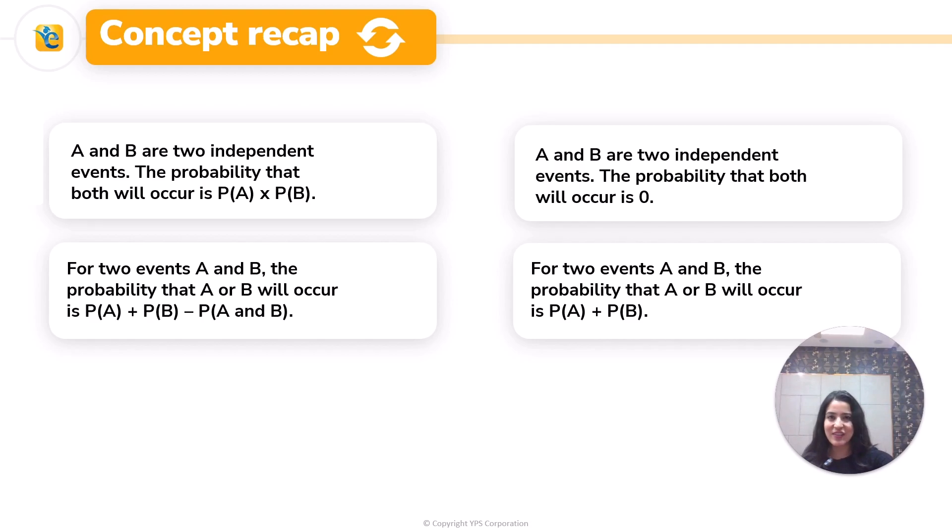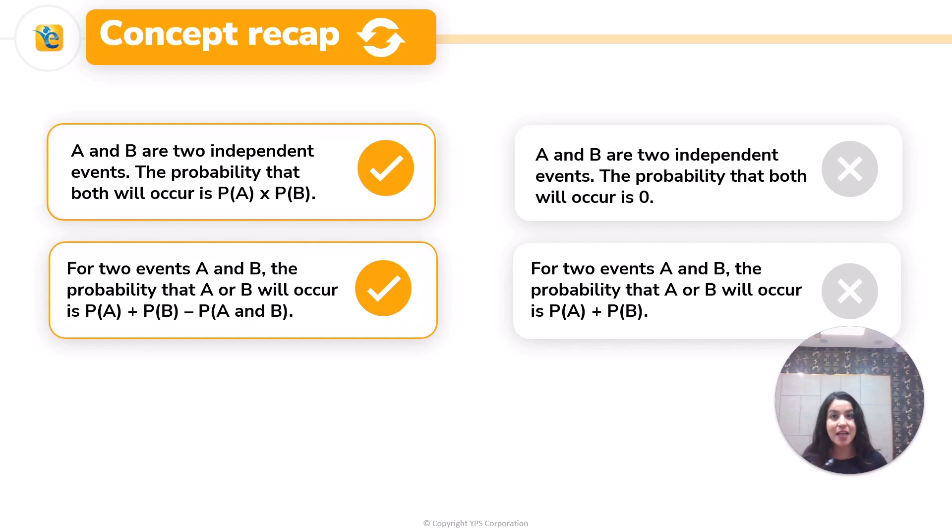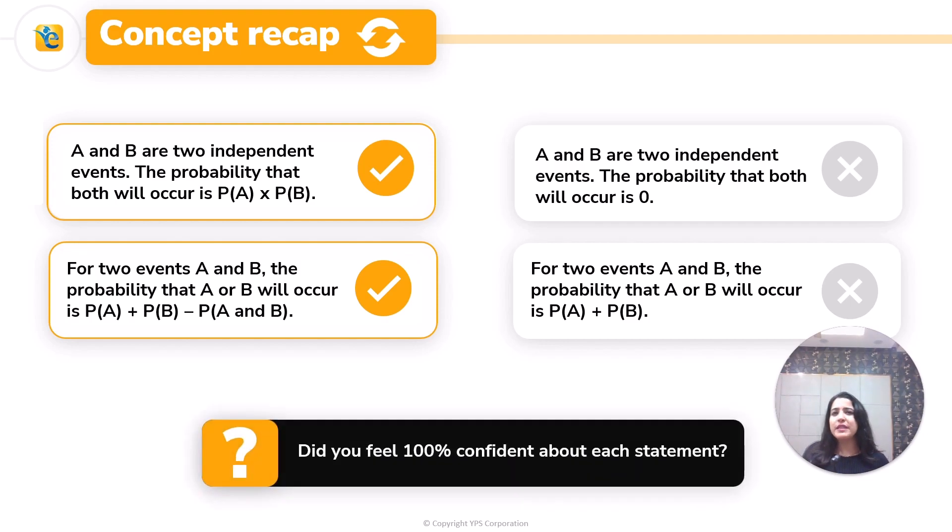Here you go. The first two statements that you see on the left-hand side are true statements, while the two that you see on the right-hand side are false. Did you get all four of these correct? If yes, were you 100% confident of these? If your answer is yes to both of these, very good, let's move on. But if no, you already know why you have to join.